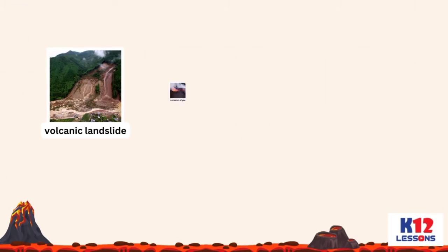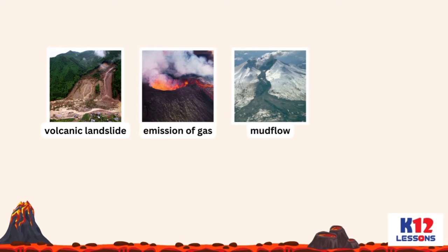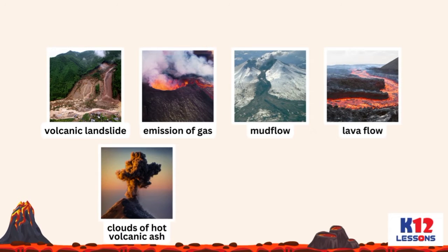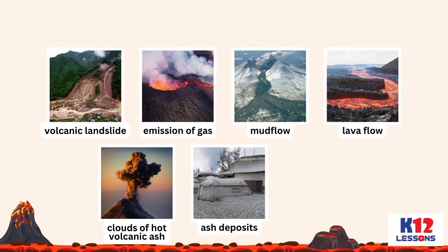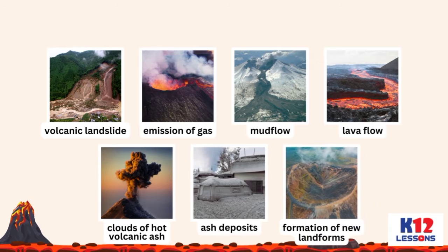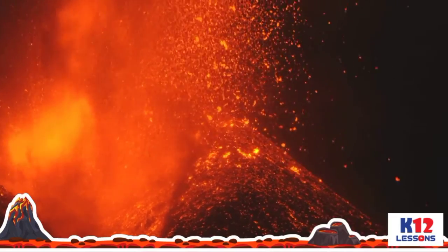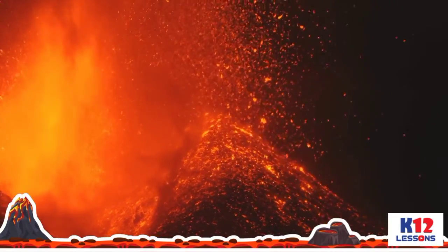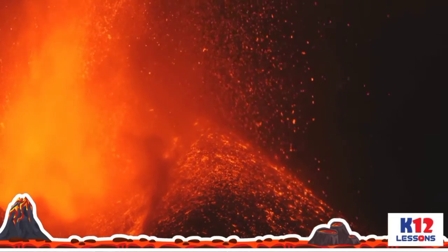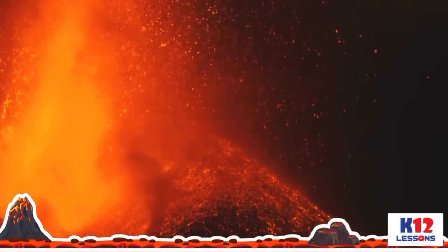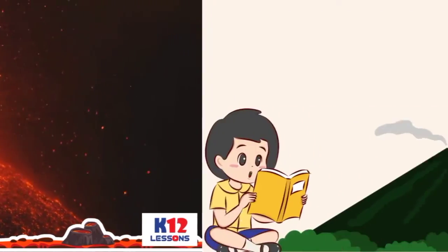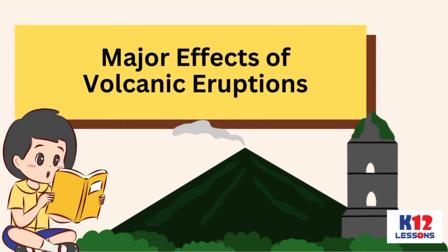Volcanic Landslides, Emission of Gas, Mud Flow, Lava Flow, Clouds of Hot Volcanic Ash, Ash Deposits, and Formation of New Landforms are some of the effects of a volcanic eruption. Many places, even miles away, could be affected by a single volcanic eruption. The following describes some of these major effects of volcanic eruptions.